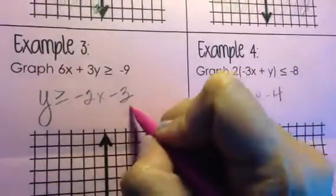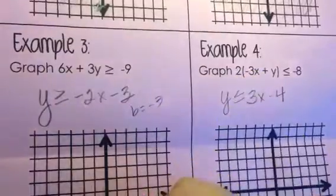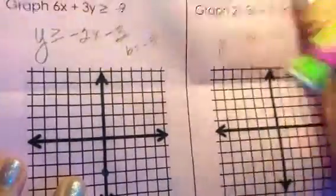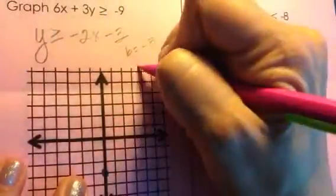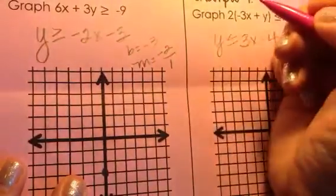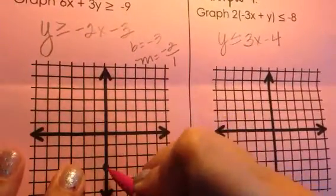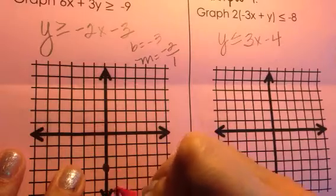Example number 3, then, my b value is negative 3. I'm going to start at negative 3 on the y-axis. My slope is negative 2. I'm going to write that over 1. And from my b value of negative 3, I'm going to go down 2 to the right 1.